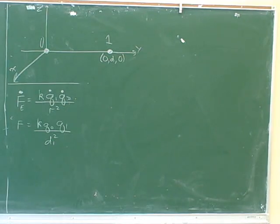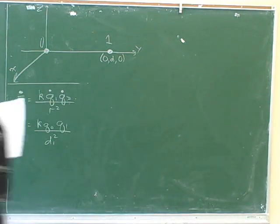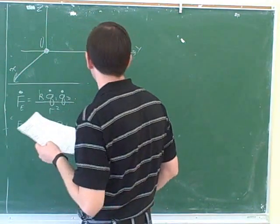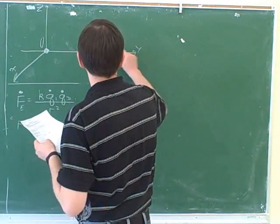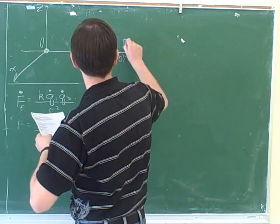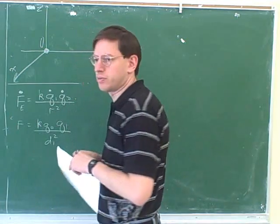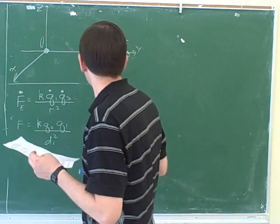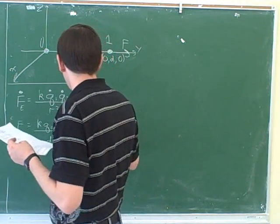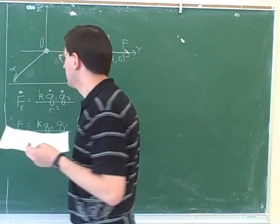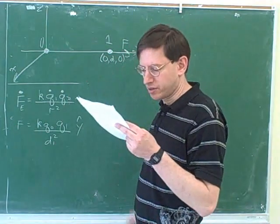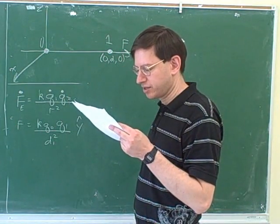How do we know the force is to the right? Because there are two positive charges. They told us that they're both positively charged, so we know that this force is to the right. We know it's along the y-axis, not the x-axis — they decided to call this the y-axis.